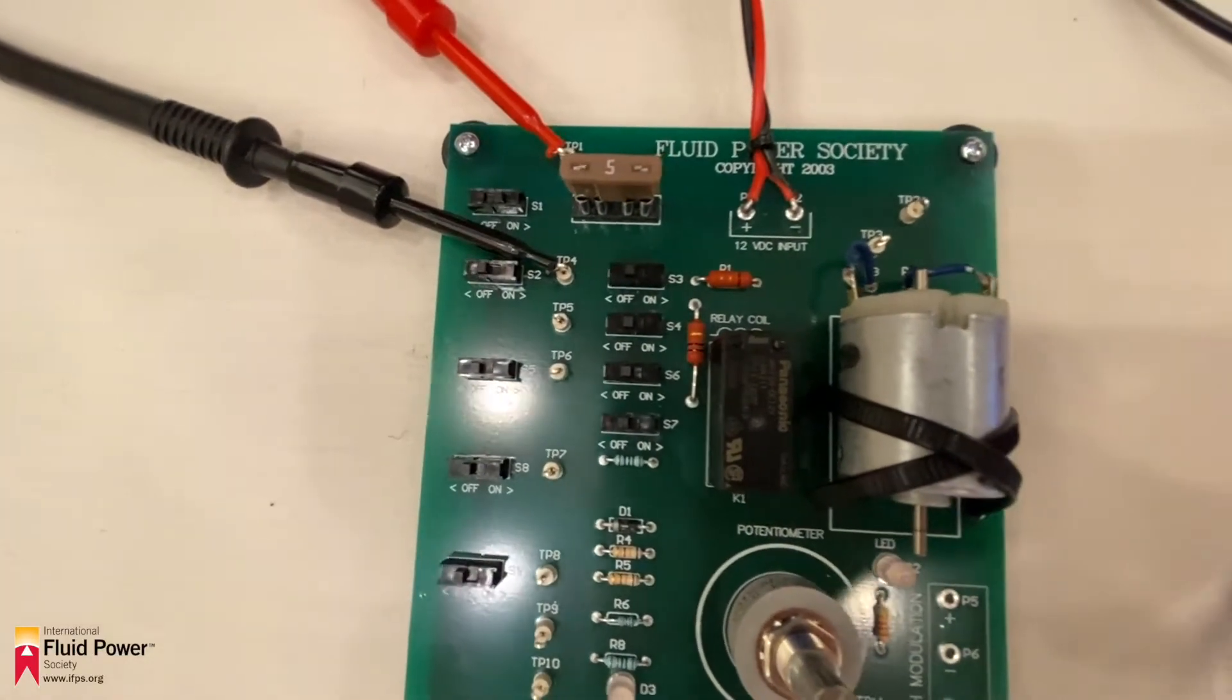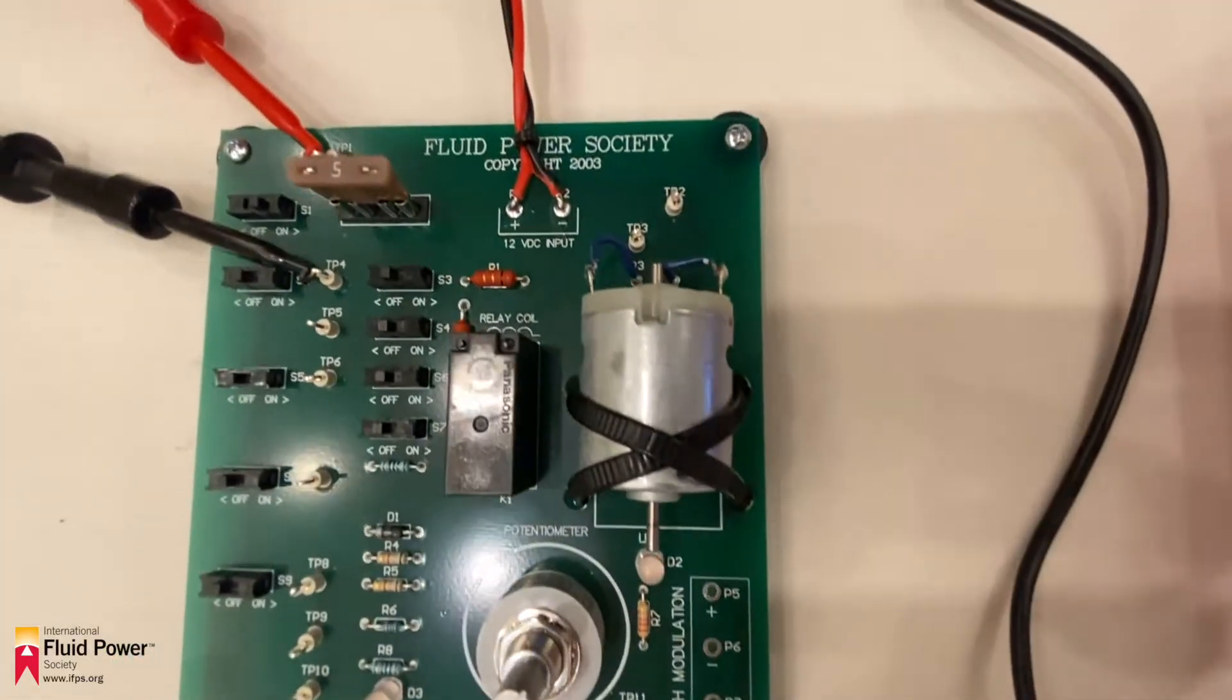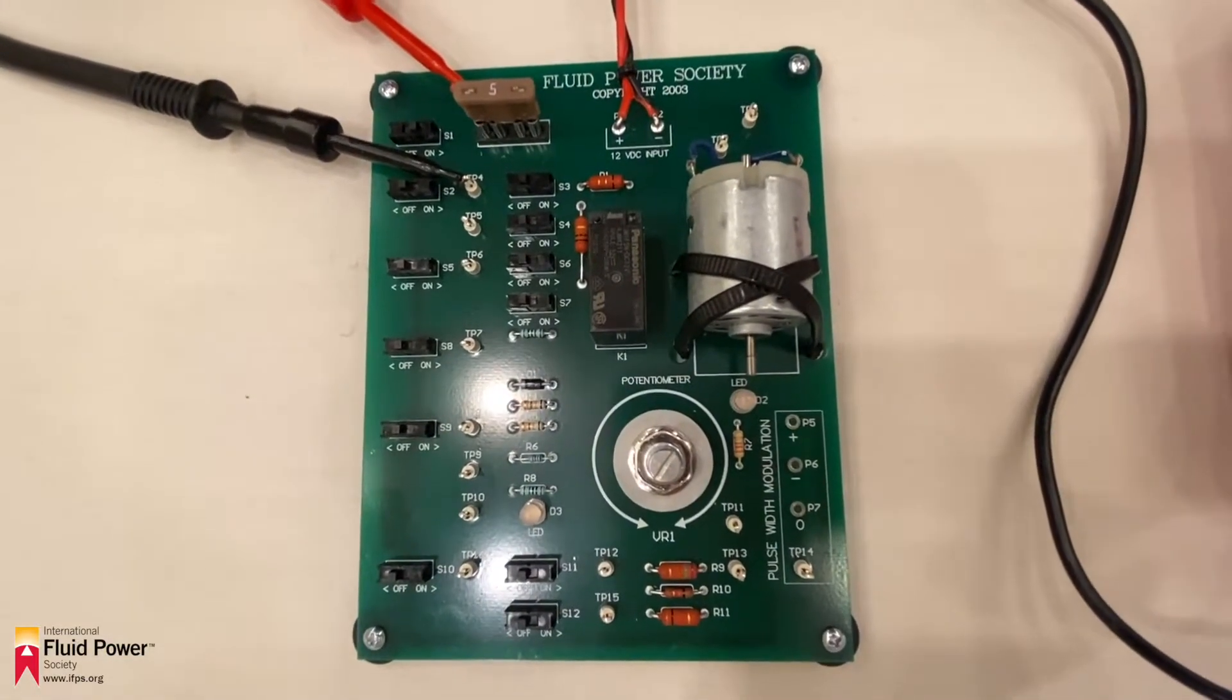Never place the black lead on the negative or ground side of the circuit as this will blow the fuse. Ensure that the meter is configured to measure maximum amperage.